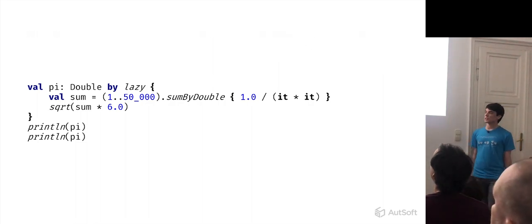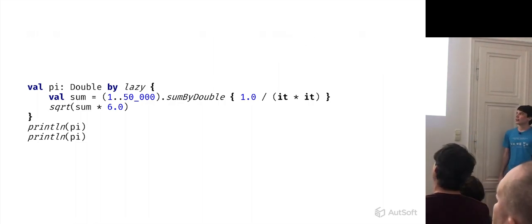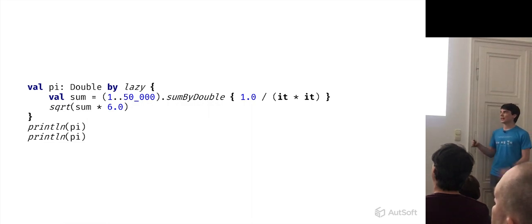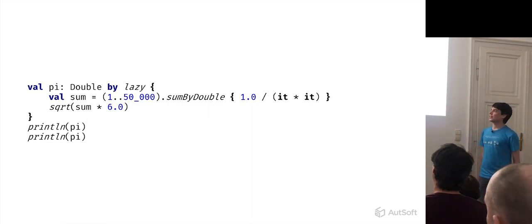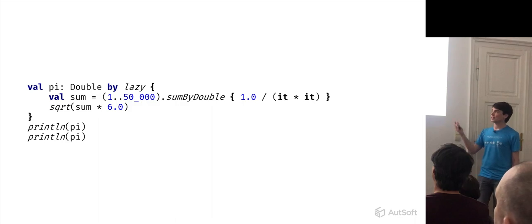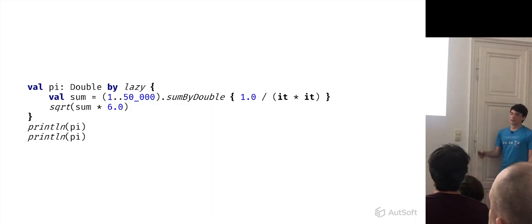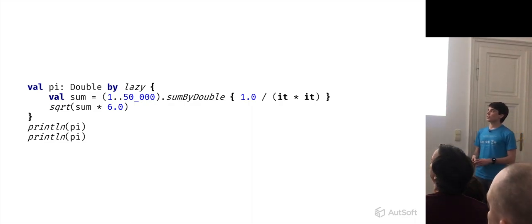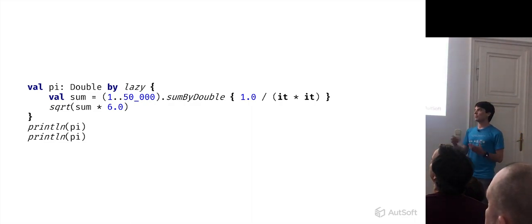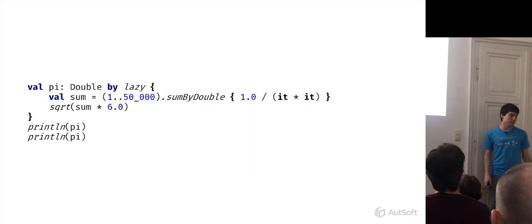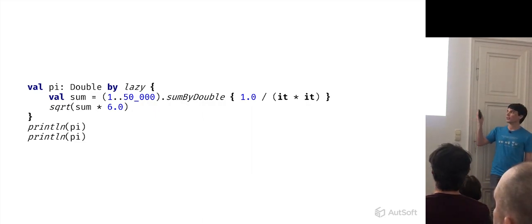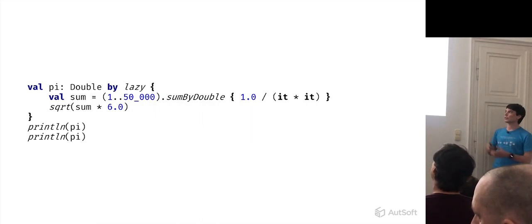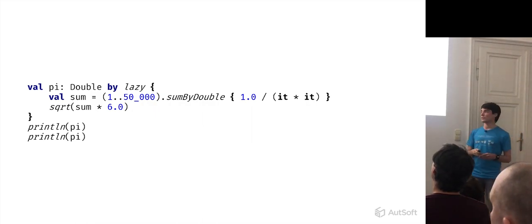We are going to focus on this last feature. Some of it is an actual feature, and some of it is just part of the standard library. The actual feature here is the `by` keyword, which tells the compiler that you are trying to serve a property by something more complex than just a custom getter or setter.